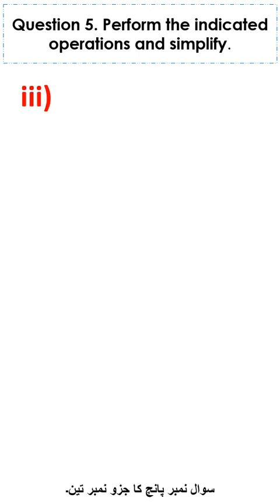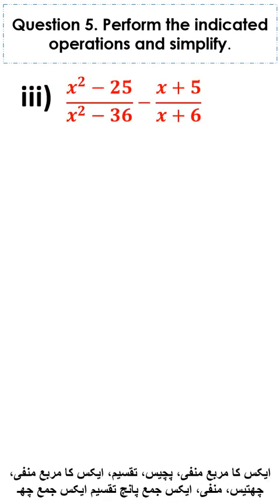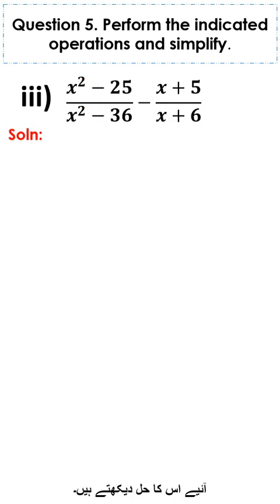Part 3 of question number 5 is x square minus 25 divided by x square minus 36, minus x plus 5 divided by x plus 6. Let's see its solution.